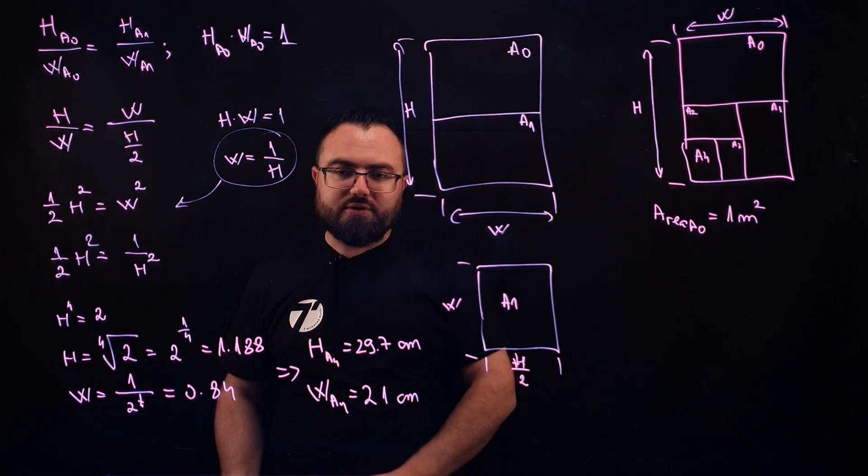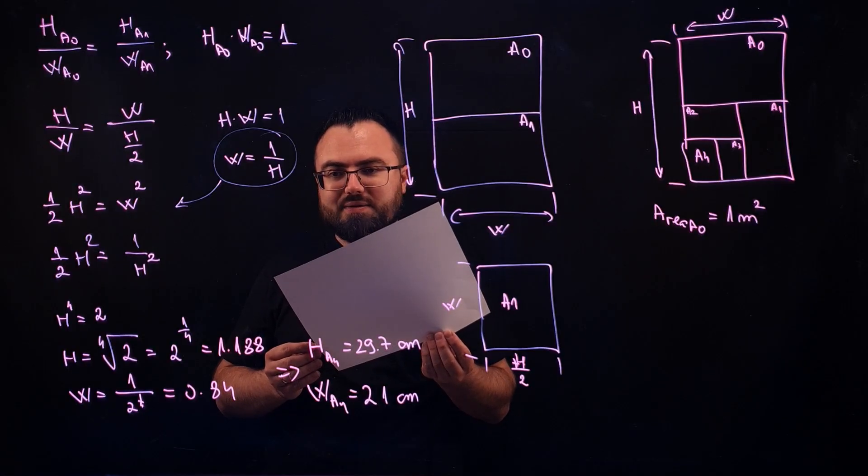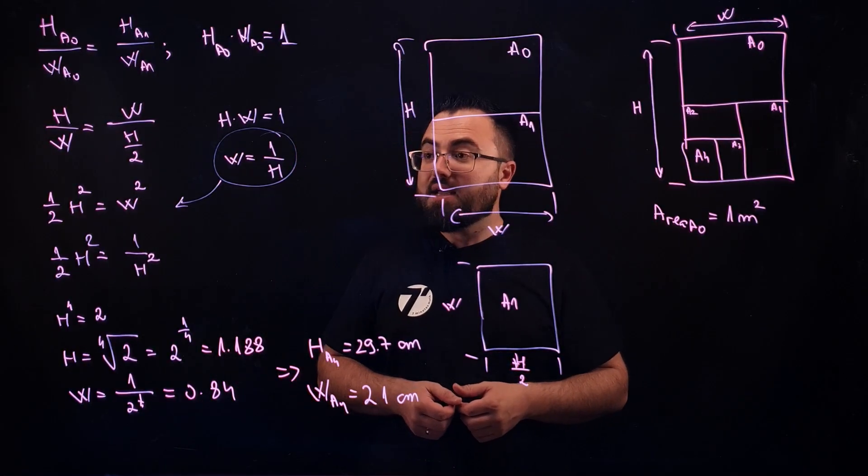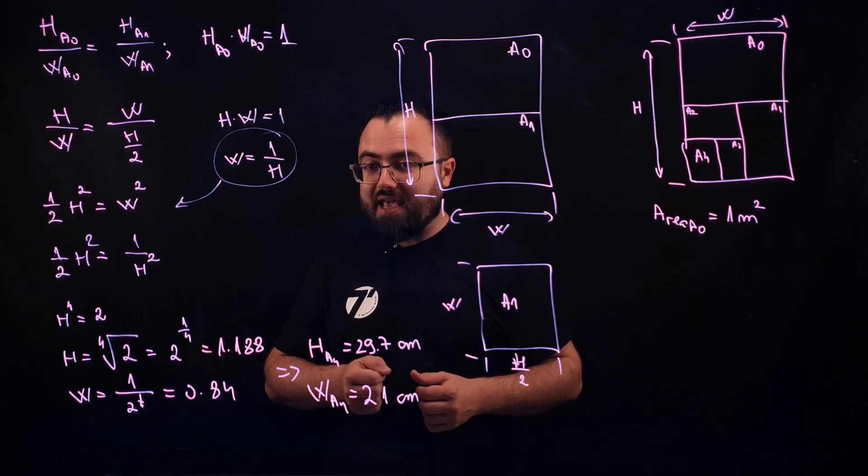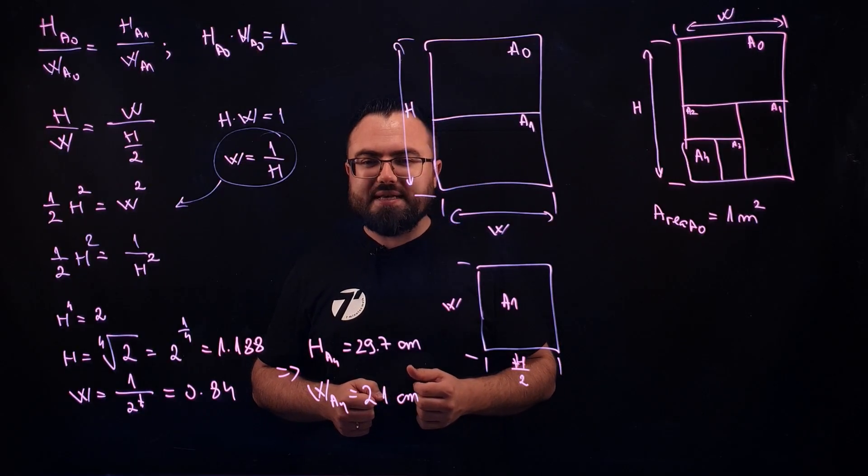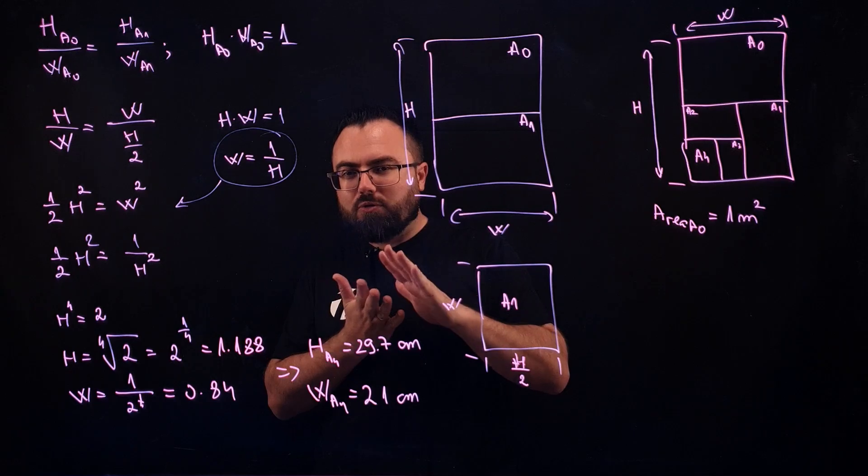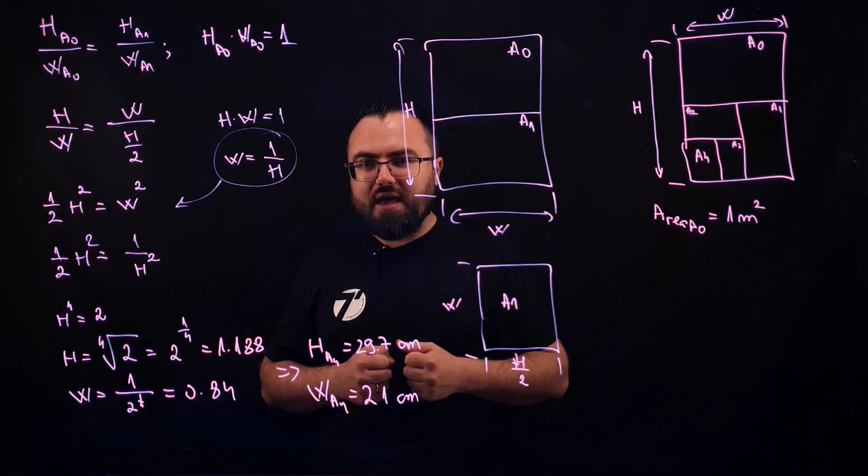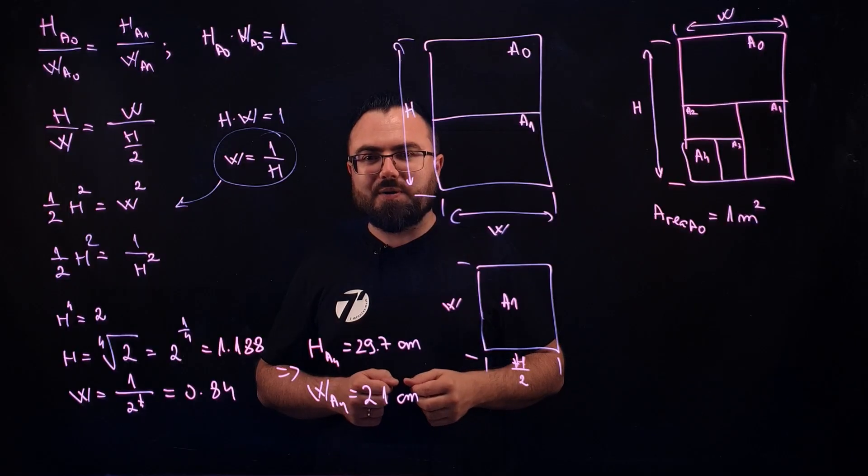And you can take a sheet of an A4 and measure it, and you will see that these approximate values you will find. This is the reason why the A4 is the standard, and that's what makes it beautiful. That when you fold it around and you turn it, it looks just like an A4, just that it's smaller.